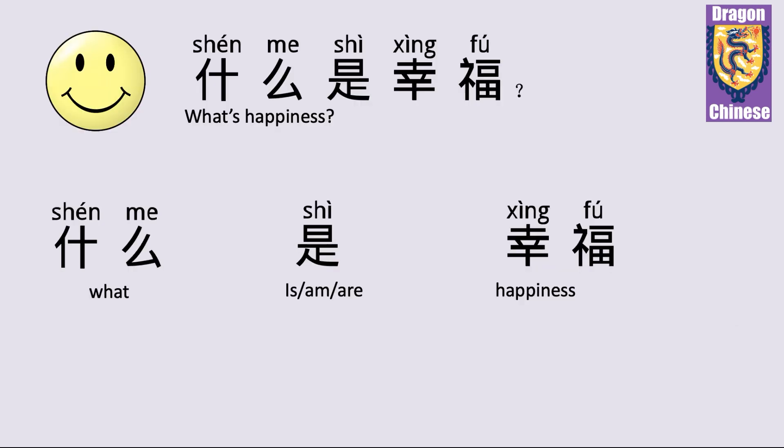什么是幸福? What's happiness? 什么 means what. 是 means is — in Chinese we say 是. 幸福 means happiness.